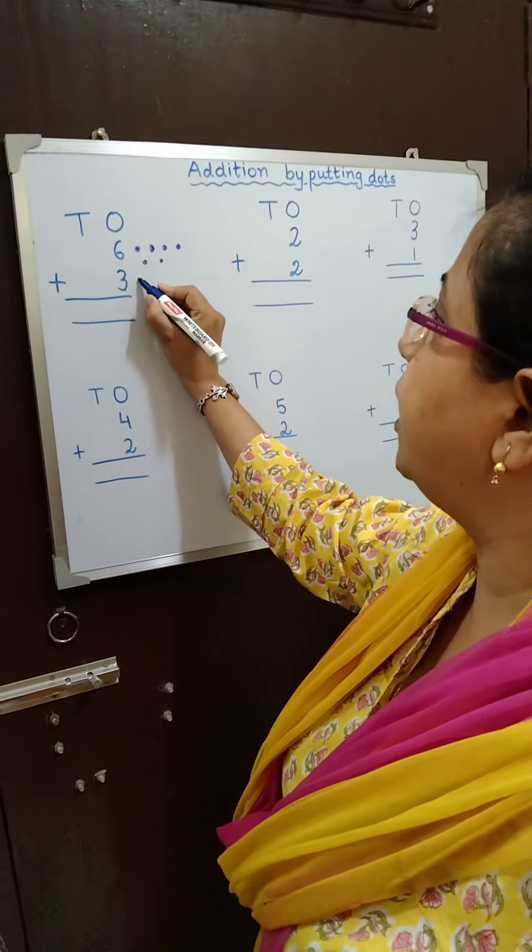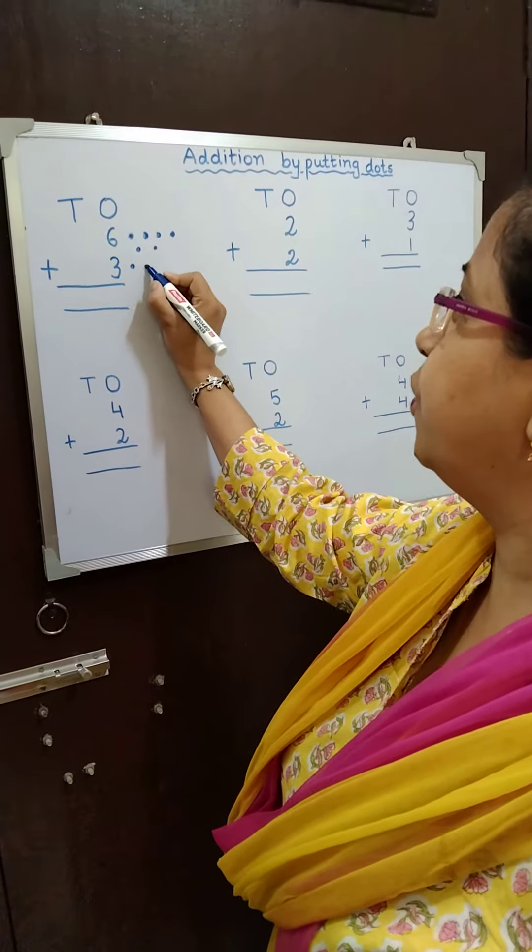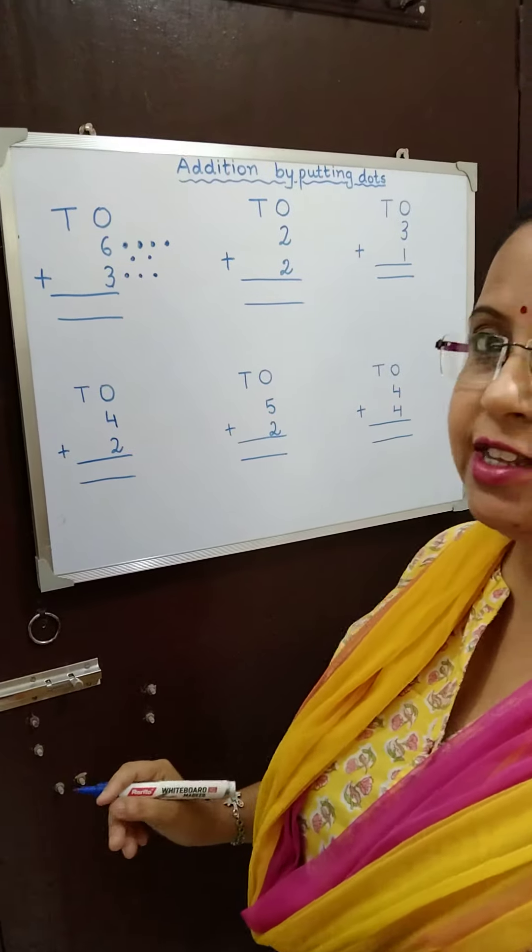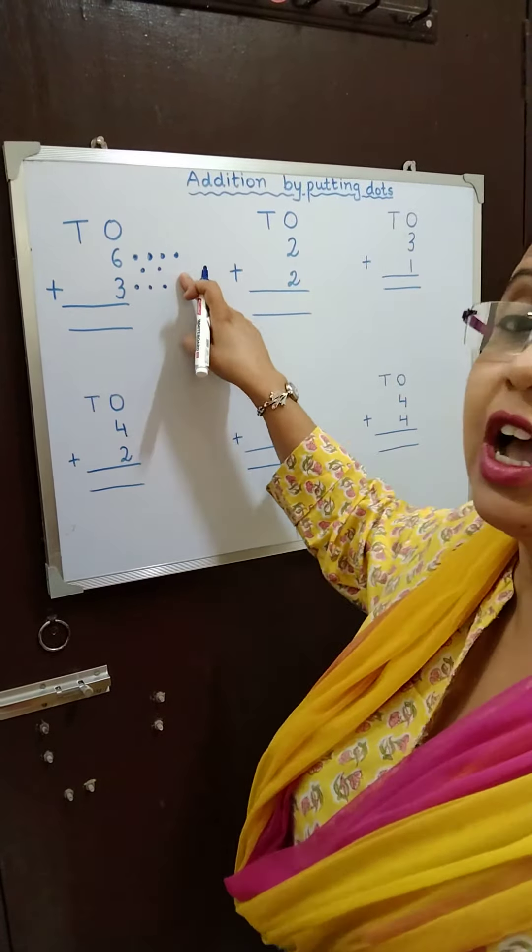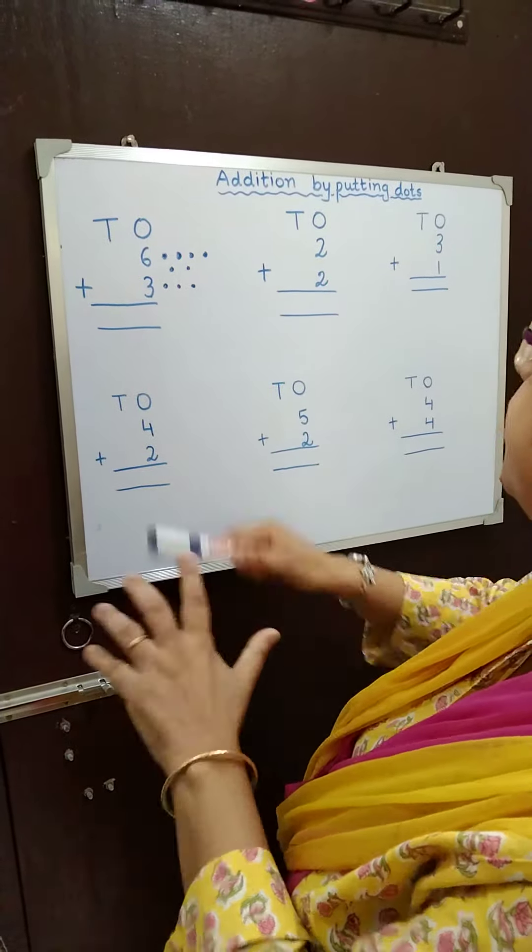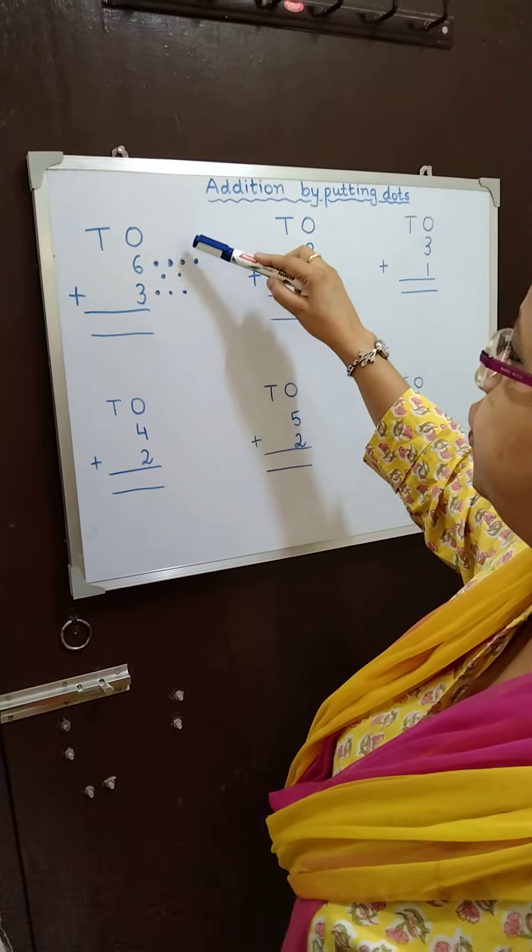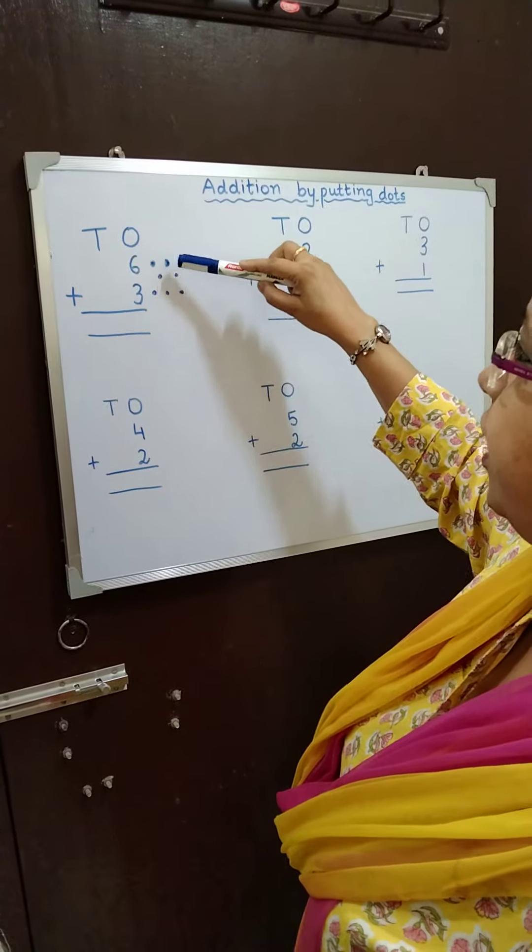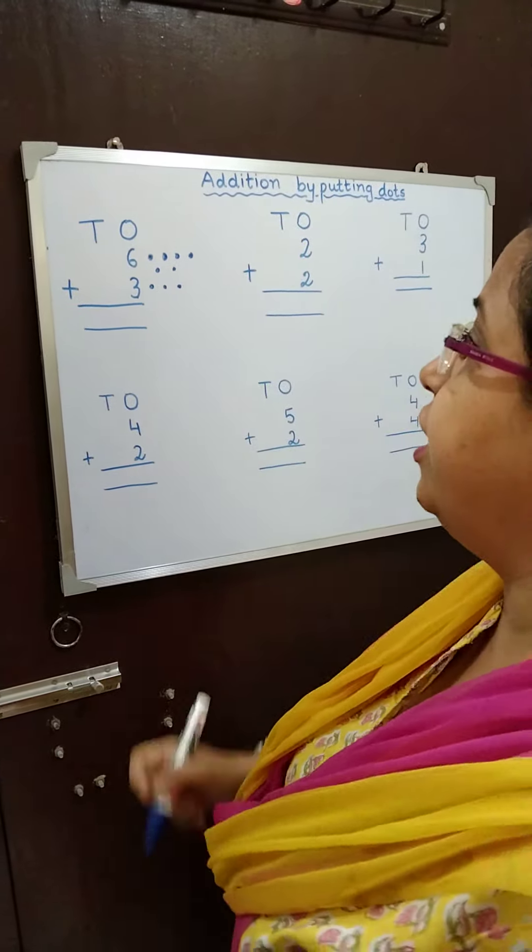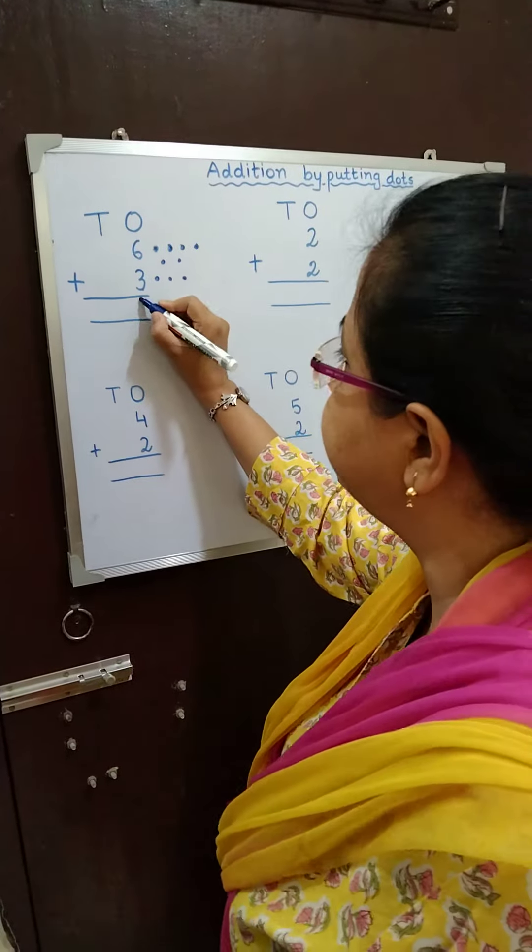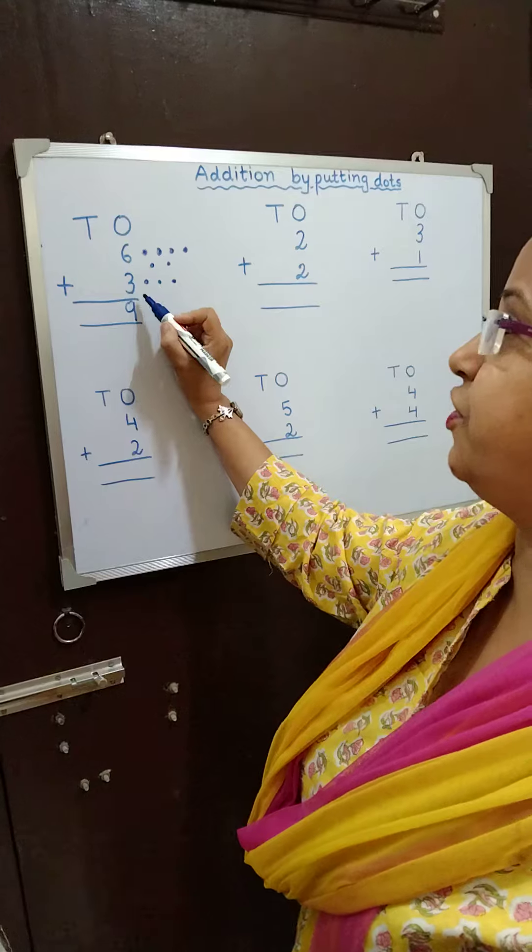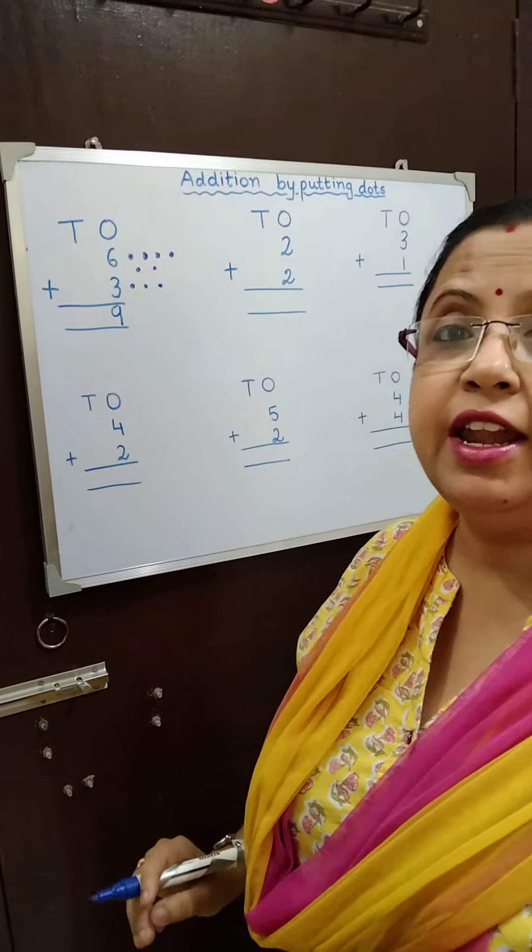This is 3. So I will put 3 dots. 1, 2, and 3. Now the next step is we will have to count the dots. So let us count. See, 1, 2, 3, 4, 5, 6, 7, 8, 9. So 9 dots and I will write 9 here. So 6 plus 3 is equal to 9.